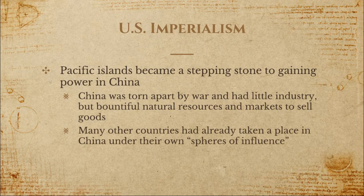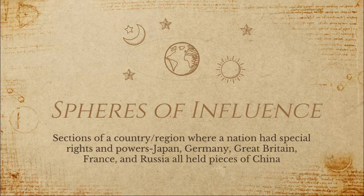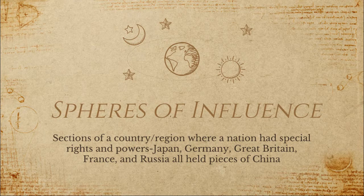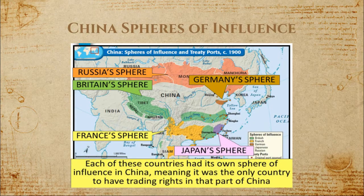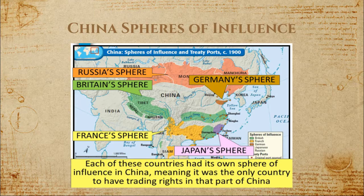Many other countries had already taken a place in China under what were called spheres of influence — sections of a country or region where a nation had special rights or powers. During this time, Japan, Germany, Great Britain, France, and Russia all held pieces of China in which they had special control. Looking at this map, you can see the different spheres of influence in China. Each nation was the only one that had trading rights in their specific sphere of influence, so there was a chance for these countries to make even more money.